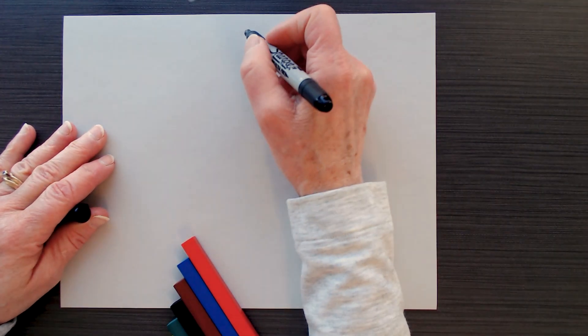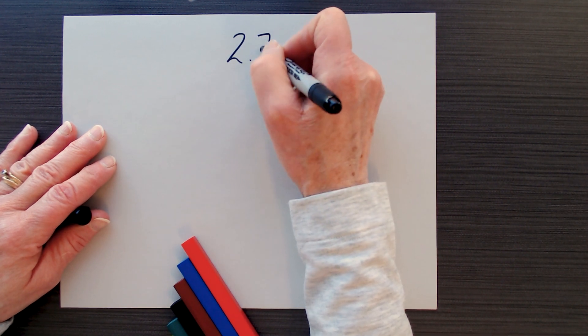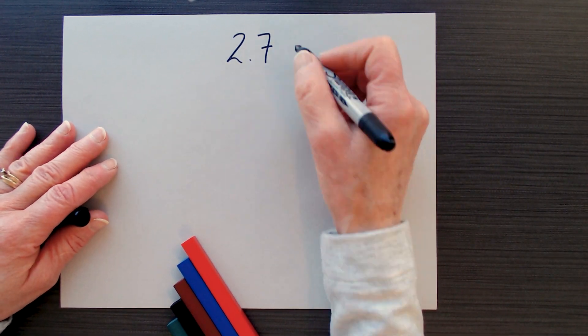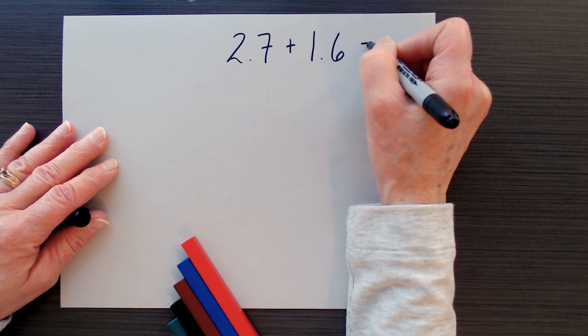Now what I'm going to do is I'm going to write down an addition expression that we want to solve. So here we have 2 and 7 tenths and we want to add 1 and 6 tenths.